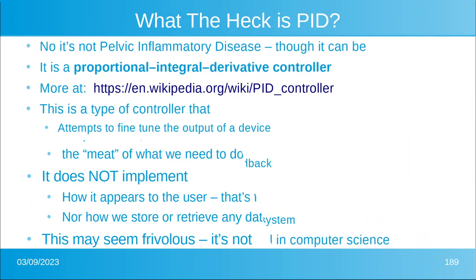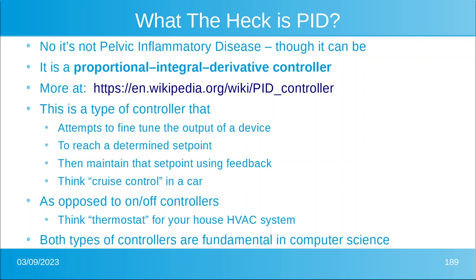Now what the heck is PID? It is not pelvic inflammatory disease, though I guess it could be. It is a proportional integral derivative controller, which is a fancy name for the cruise control in your car. It's a type of controller that attempts to fine-tune the output of a device in order to reach a determined set point, and then it maintains that set point using feedback. So your cruise control pushes the accelerator between zero and one hundred percent and maintains the speed of the car by constantly varying the accelerator.